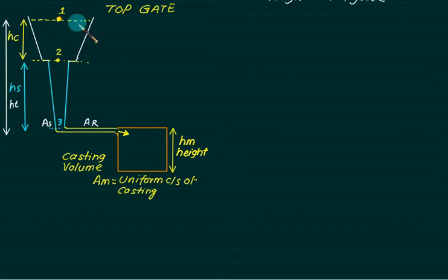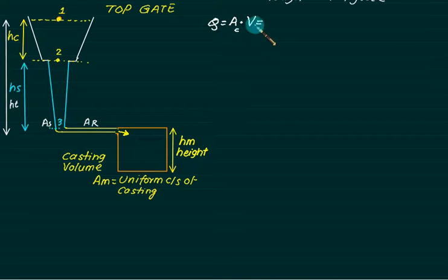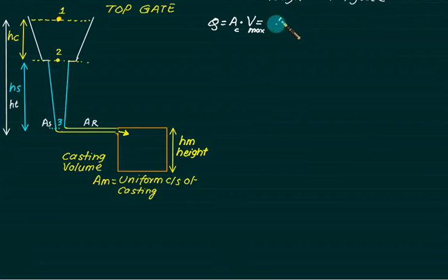For this one, if you check the discharge equation, your discharge equation is basically Q equals to area multiplied by velocity, same as area of choke multiplied by maximum velocity. The area of cross section is constant at AM, and this has units of meter cube per second.